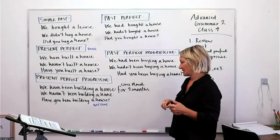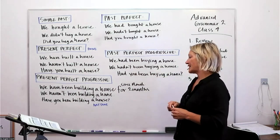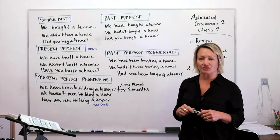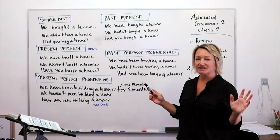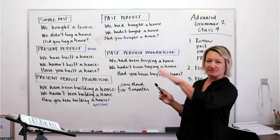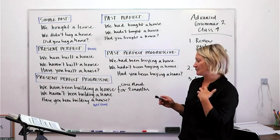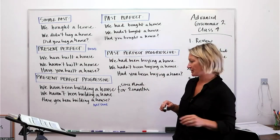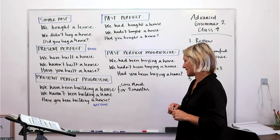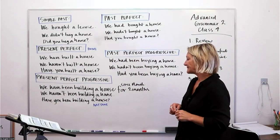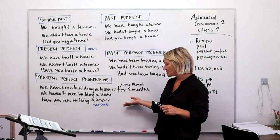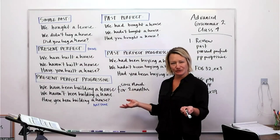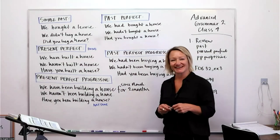'We haven't been building a house' — so someone made a mistake and told this person 'I've been building a house,' but we haven't. And then the question: 'Have you been building a house?'